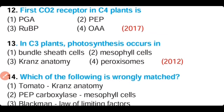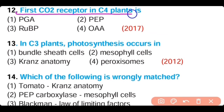Question number 12. The first CO2 acceptor in C4 plants is: PGA, phosphoenol pyruvate (PEP), RUBP, or oxaloacetic acid. The correct answer is option 2. Phosphoenol pyruvate (PEP) is the first carbon dioxide acceptor in C4 plants.